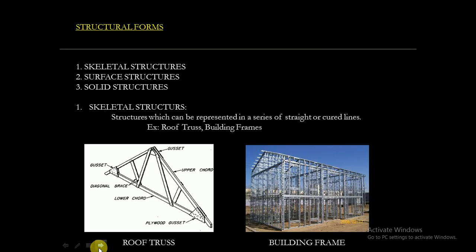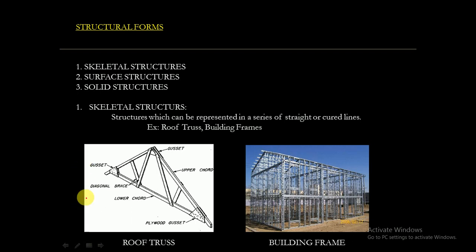The first topic of Module 1 is structural forms. There are three types of structural forms: skeletal structures, surface structures, and solid structures. Skeletal structures are structures which can be represented as a series of straight or curved lines. Examples of skeletal structures are roof structures and building frames.